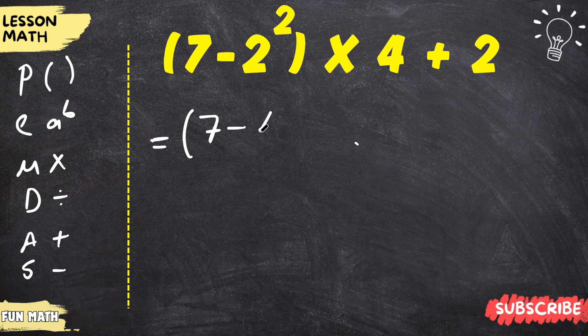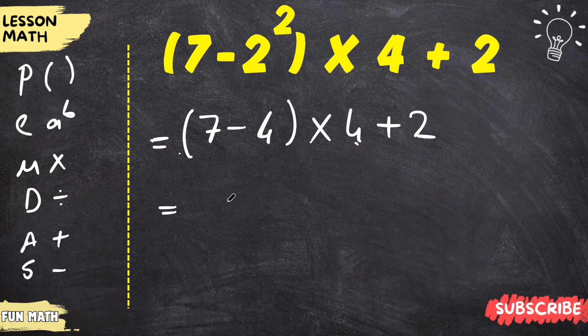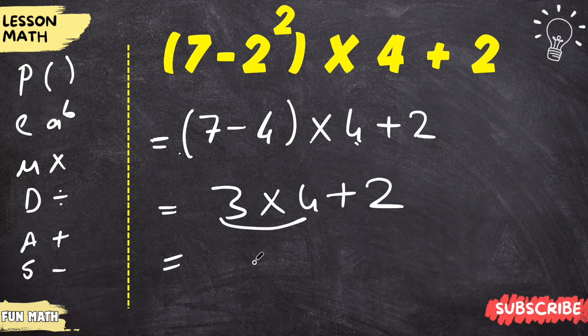Times 4 plus 2. 7 minus 4 equals 3. Now we multiply. 3 times 4 equals 12.